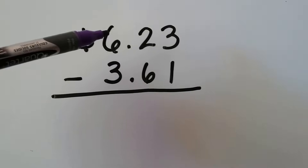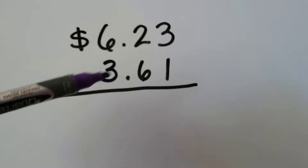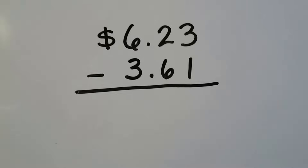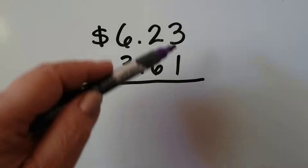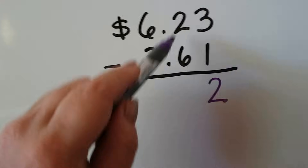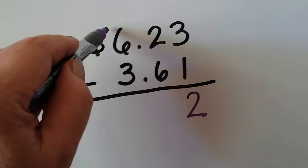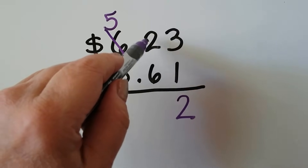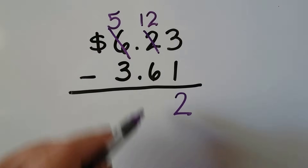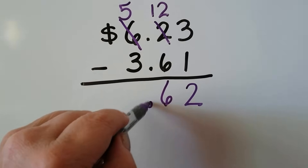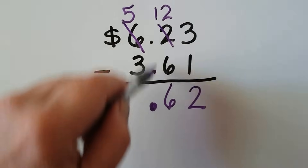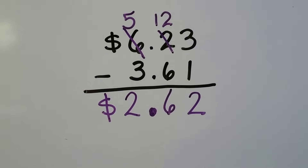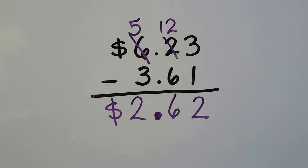Let's pretend this is how much money we have when we walk into the store and this is how much we're spending. So we had 6 dollars and 23 cents and we're going to spend 3 dollars and 61 cents, and we want to see how much we have left over. Let's start with the ones: 3 take away 1 is 2. 2 take away 6 — we have to regroup. That becomes a 5, and we add 10 tens to the 2, making it 12 tens. 12 take away 6 is 6. We remember our decimal point in a neat column and 5 take away 3 is 2. We have 2 dollars and 62 cents left over.